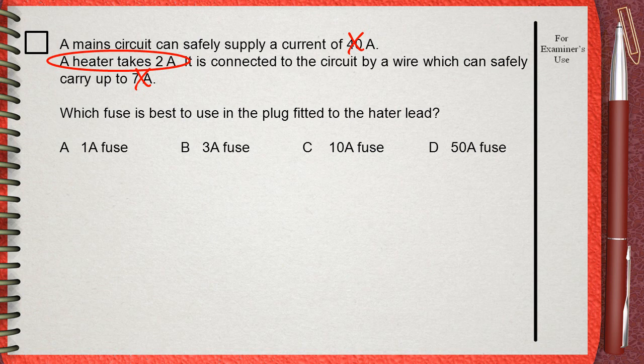The 1 Ampere fuse is lower; it will melt with normal operation. The 10 Ampere and 50 Ampere fuses are both much higher than the 2 Amperes needed by the heater, so they will not melt and will not provide safety.